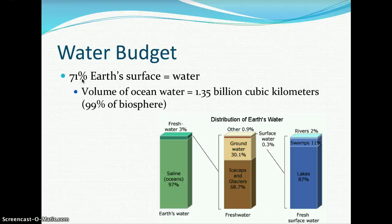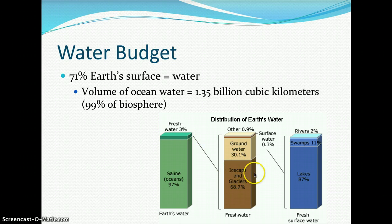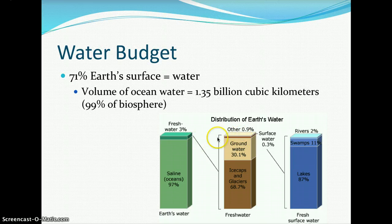Regarding Earth's water budget: 71% of Earth's surface is water, which is why Earth is called the 'blue planet.' The volume of ocean water is about 1.35 billion cubic kilometers, representing 99% of the biosphere. Of Earth's total water distribution, 97% is saltwater and only 3% is fresh water. Of that 3%, 68.7% is trapped in ice caps and glaciers, and 30.1% is underground as groundwater. The remaining fraction includes 0.3% surface water and 0.9% other sources.